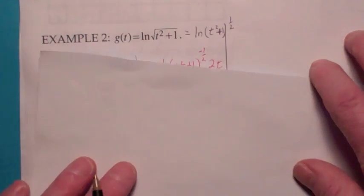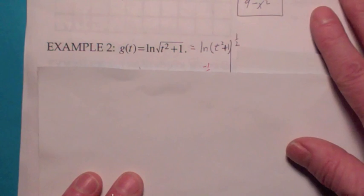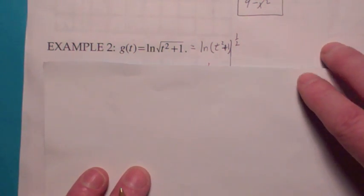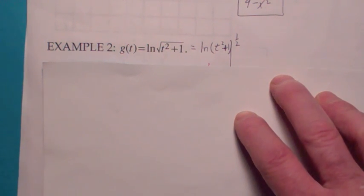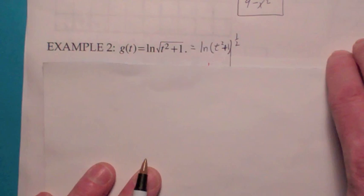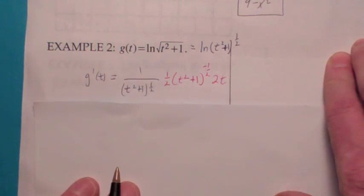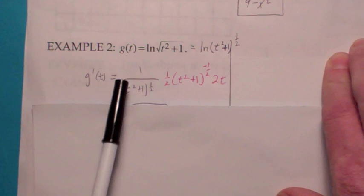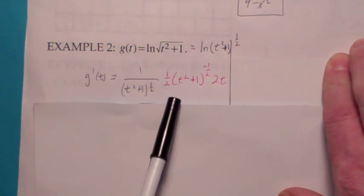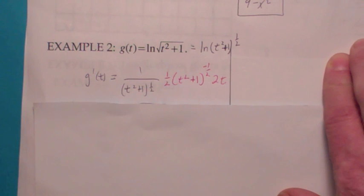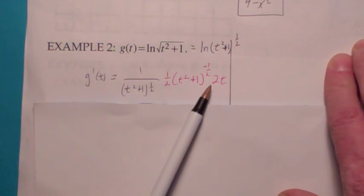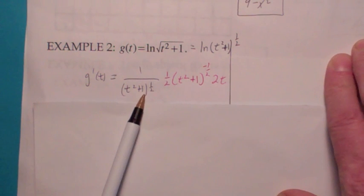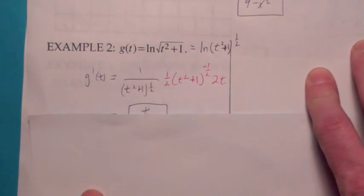Let's do another one. What if g of t equals the natural log of the square root of t squared plus 1, which could also be written as natural log of t squared plus 1 to the 1 half power. The rule says you take 1 over whatever you're taking the logarithm of, so 1 over t squared plus 1 to the 1 half. You have to multiply it times the derivative of what's inside. The derivative of what's inside is 1 half times t squared plus 1 to the negative 1 half times 2t.